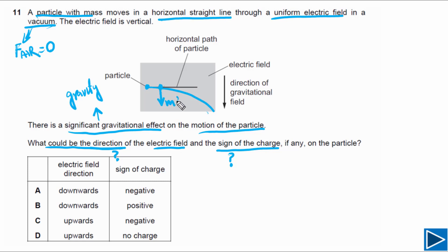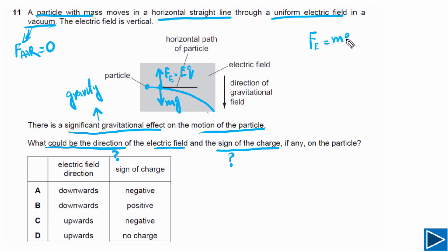We have mg acting downward. Since the particle moves in a uniform electric field, there must be another force — the electric force — acting upward and equal to mg. We know electric force equals Eq, so Fe must equal mg for the particle to move horizontally. Now let's look at the options to find the answer.